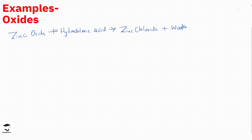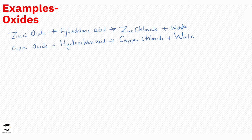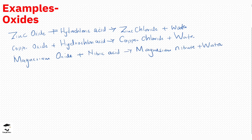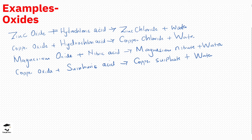Copper oxide reacts with hydrochloric acid to form copper chloride and water. We can also use magnesium oxide with nitric acid — magnesium oxide reacts to form magnesium nitrate and water. Finally, copper oxide reacted with sulfuric acid also forms a salt and water. Those are some examples of reactions of oxides with acids. Remember, the salt is always formed as a derivative of the acid.